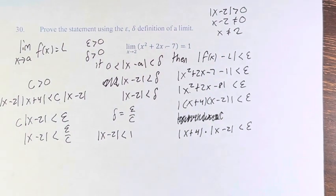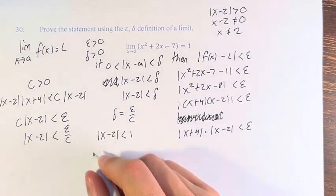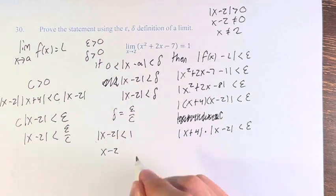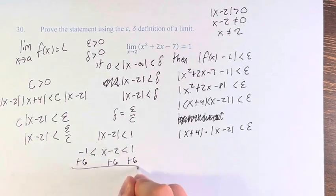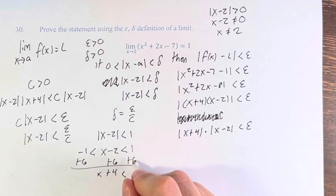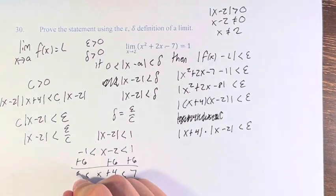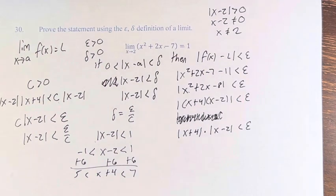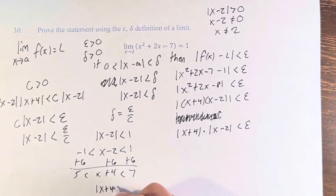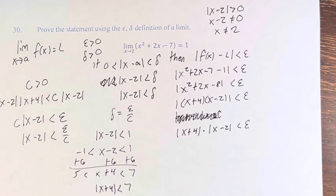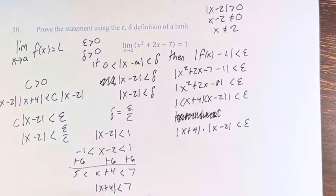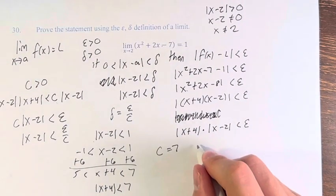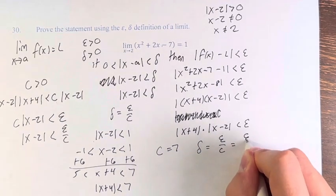We have to turn this into something that applies to c. If the absolute value of x minus 2 is less than 1, that means x minus 2 is between negative 1 and 1. If we add 6 to all sides, we get x plus 4 is between 5 and 7. Therefore, the absolute value of x plus 4 is less than 7. Since 7 is greater than x plus 4, then 7 is a valid value of c. So c equals 7, and therefore delta equals epsilon over c equals epsilon over 7.